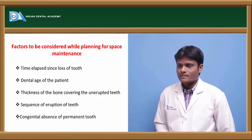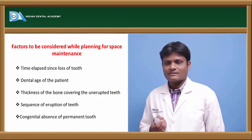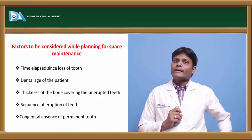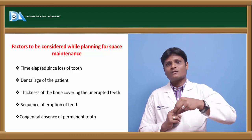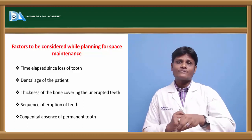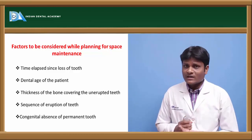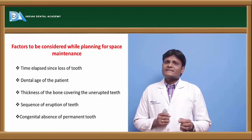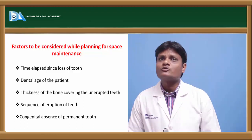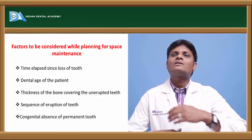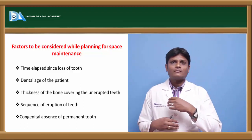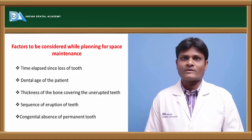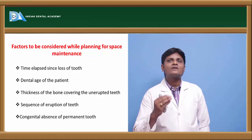Third, thickness of the bone covering the unerupted teeth: the thicker the bone, the more delayed the tooth eruption. It is mandatory in that situation to maintain the exfoliation space, as more time is needed for eruption of the underlying permanent tooth. It is said that it takes about four to five months for a premolar to erupt through one millimeter of bone thickness. The more thicker the bone, the more delay in eruption of the succeeding permanent tooth, making space maintenance an absolute indication.